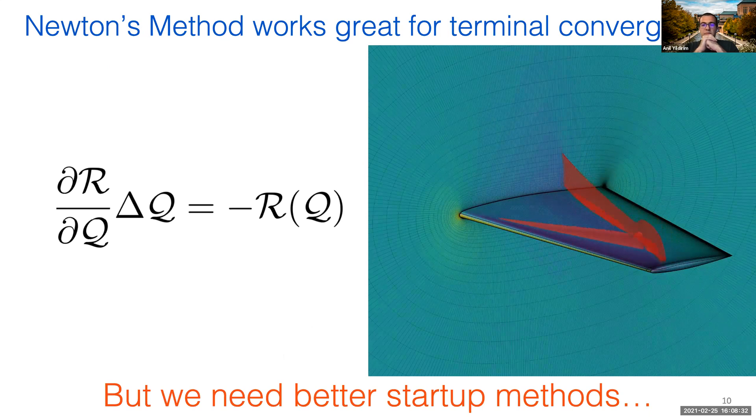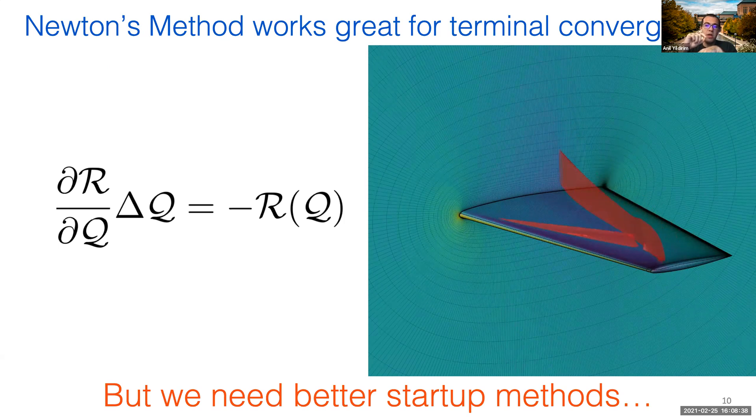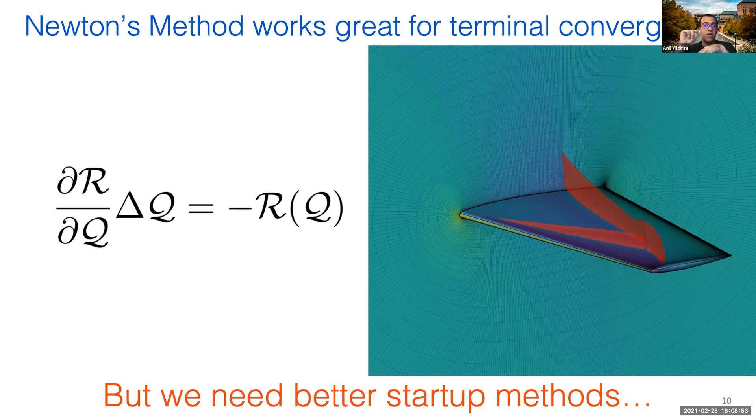The baseline Newton's method works really well near the final solution. However, when we're away from the solution, the method might not converge at all. The video on the right shows the convergence of a simple wing in transonic condition, which results in multiple shock waves on the upper surface of the wing. The transients caused by these shock waves cause Newton solvers to struggle, and we need better startup methods to handle these transients.